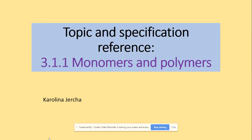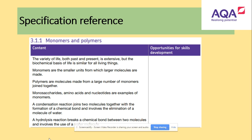Welcome to Monomers and Polymers. In terms of the specification, you need to be aware of the key definitions: monomers are the smallest units from which large molecules are made, and polymers are molecules made from a large number of monomers joined together. Monosaccharides, amino acids, and nucleotides are examples of monomers.